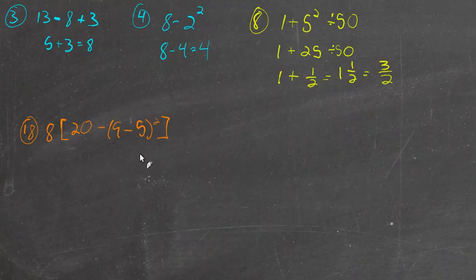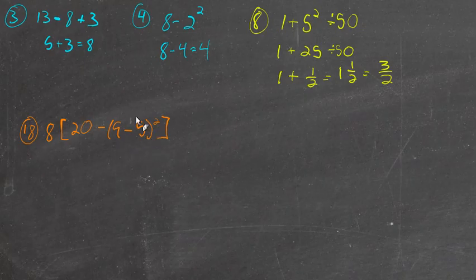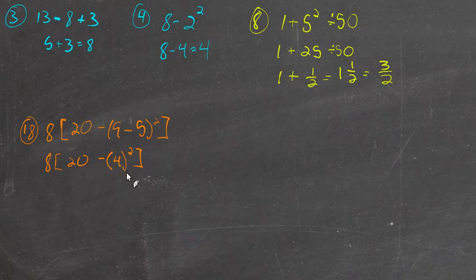So first we have parentheses. So this parentheses is 9 minus 5, so we're going to do that first. 9 minus 5 is 4. I'm going to square that. Okay. So now there's really no need for me to have written these parentheses here. The only thing in there is 4. There's nothing to do. It's just 4. So 4 squared.